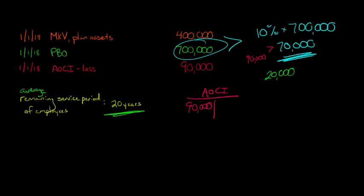Then we're going to take this $20,000, which is the amount of the AOCI that exceeds the corridor that we calculated here, that $20,000, and we're going to divide it by the average remaining service period of 20 years. And that's going to give us $20,000 divided by 20 is $1,000.